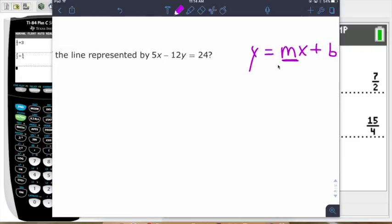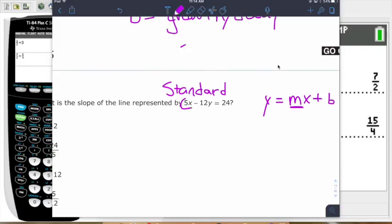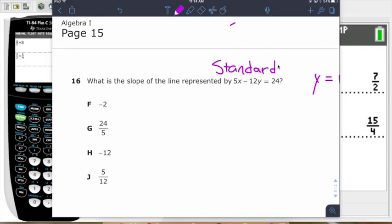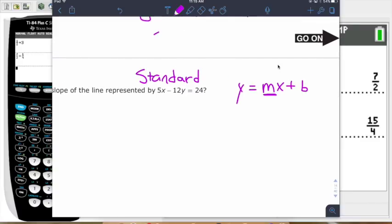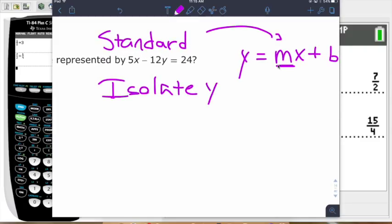The format that our equation is given to us in is called standard form. So we are not able to tell what the slope is right away from that. Some people want to say it's the thing next to the x, but we have to get it into slope-intercept form first. So we do this by getting y by itself, isolating y and then looking at what's next to the x.